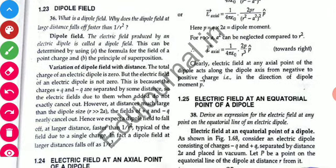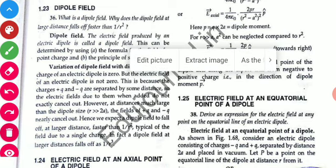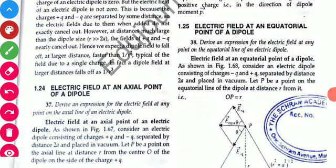Students, you have to answer this question in this way. This also addresses the question: why does the electric dipole field at large distances fall off faster than 1/r²? In the next video we will discuss the electric field due to an electric dipole at the axial point and the equatorial point, and we will also discuss what the axial point and equatorial point are.